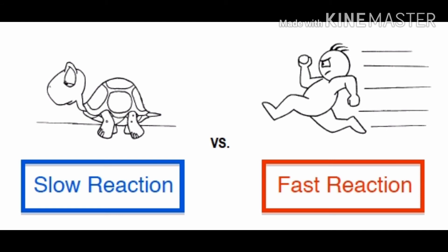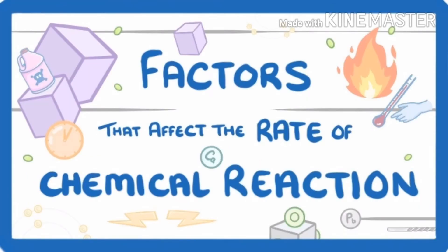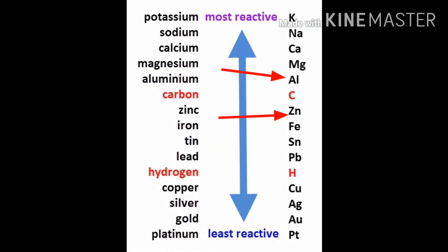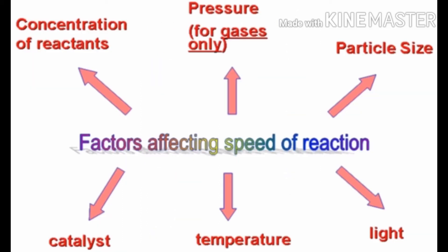Now we are going to learn the different factors which affect the rate of chemical reaction. The first is nature of reactant. To explain this, aluminium is more reactive than zinc, so when both of these elements react with hydrochloric acid, the reaction of aluminium with hydrochloric acid is faster than the reaction of zinc with hydrochloric acid. It means the nature of reactivity of an element influences the rate of chemical reaction.